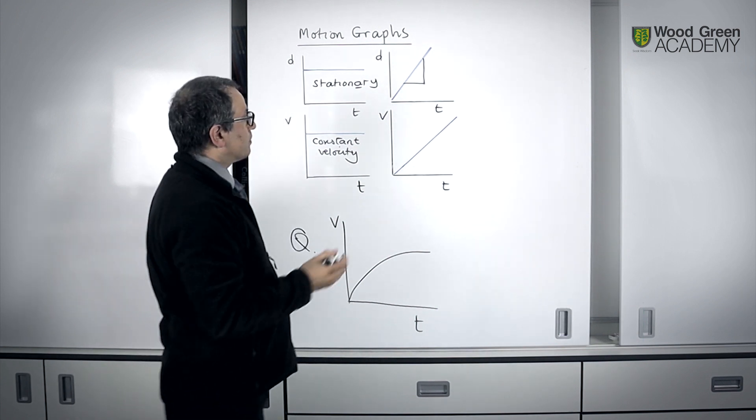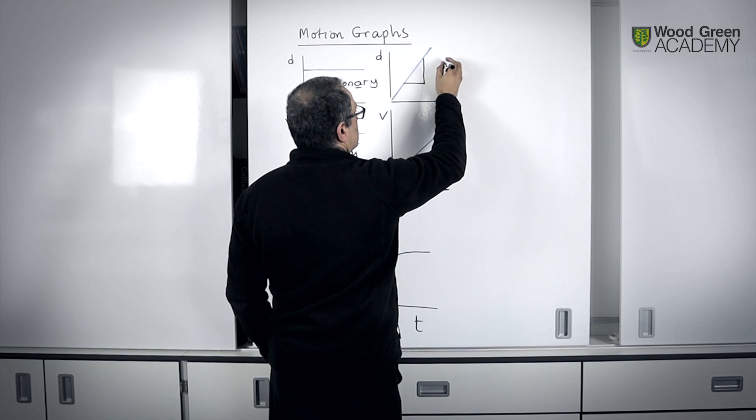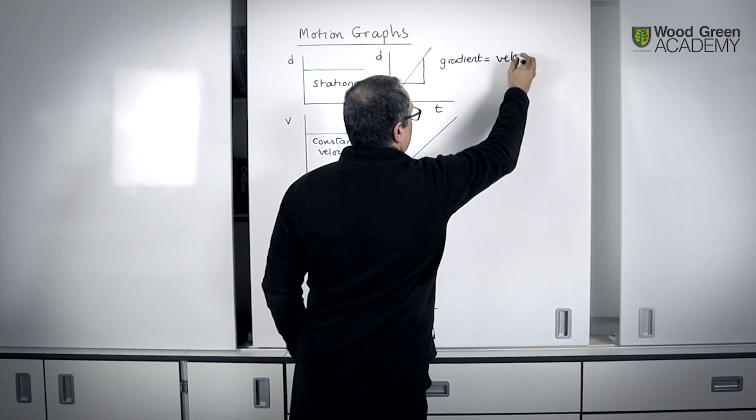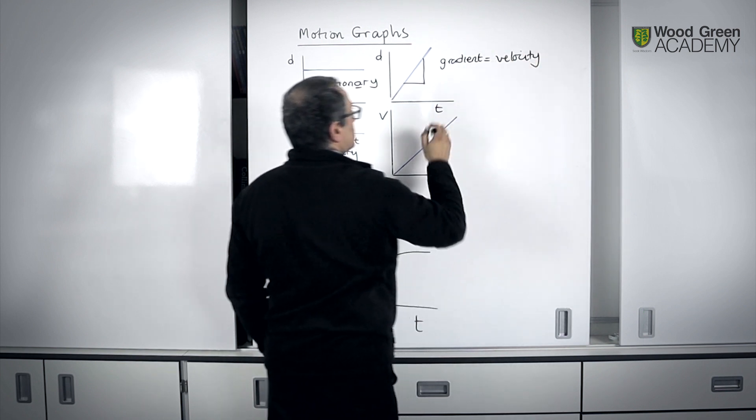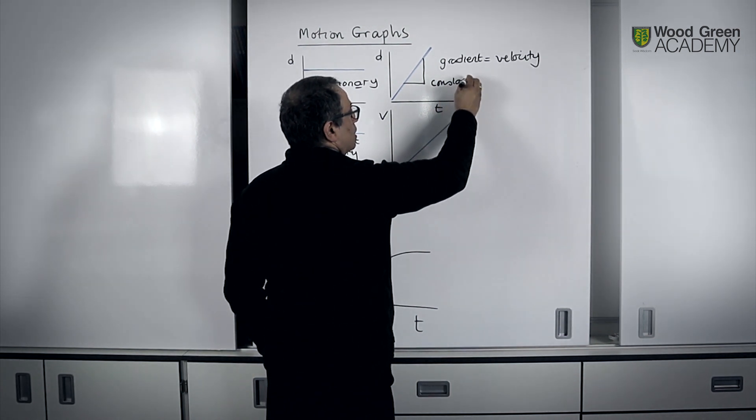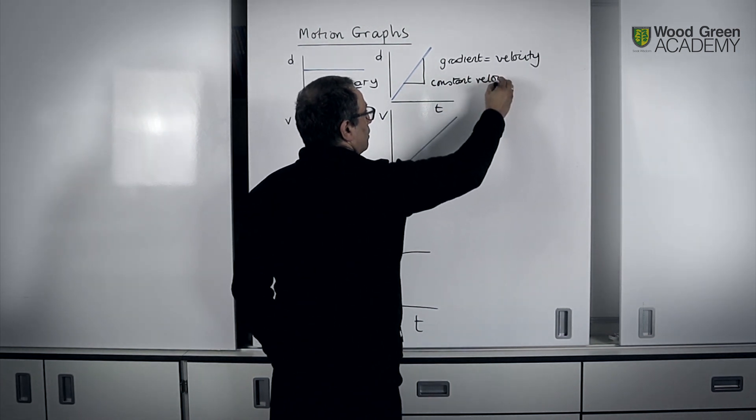Now, if that's the case, in this context, the gradient represents a velocity. And we can describe this one as an object travelling at a constant velocity.